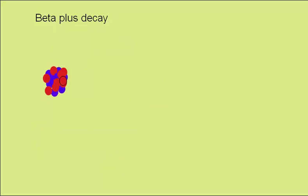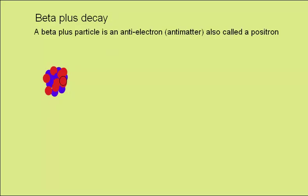Now beta plus decay. A beta plus particle is an anti-electron. This is anti-matter. It's also got its own name of positron.